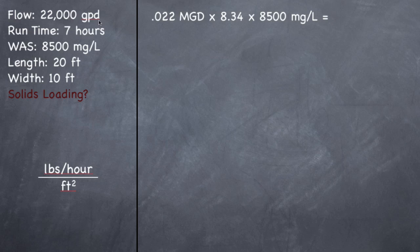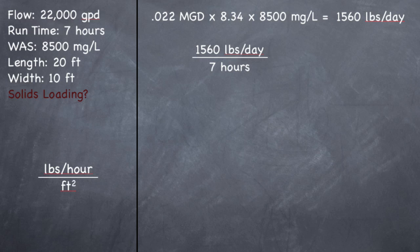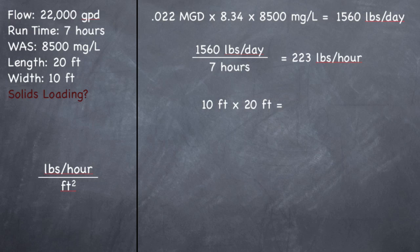So let's figure out pounds per day. So I have a flow of 22,000 gallons per day. I need to turn that into MGD, so I divide it by 1 million. So that's 0.022 MGD times 8.34 times my concentration. When I multiply all those together, you should get 1,560 pounds per day. Now here's the key, they ran the unit for seven hours. So you need to take this number and divide it by how long they ran it to find out pounds per hour. So 1,560 divided by seven hours should give you 223 pounds per hour. So that's how many pounds they're sending to this DAF unit per hour. Now all we have to do is find out square feet. 10 feet wide times 20 feet long gives you 200 feet squared.